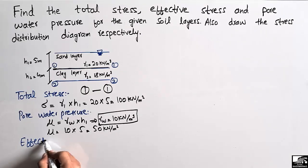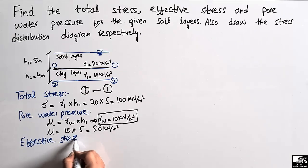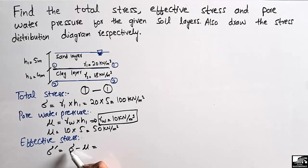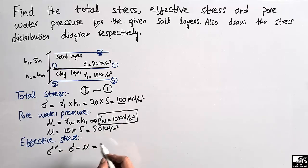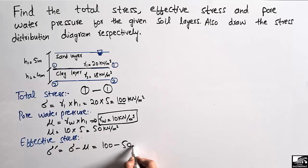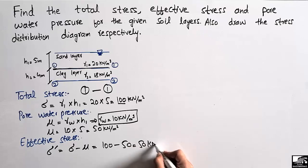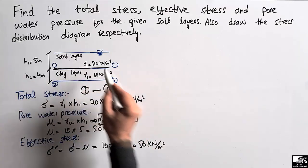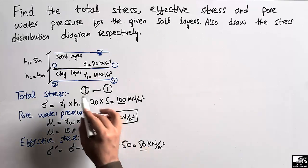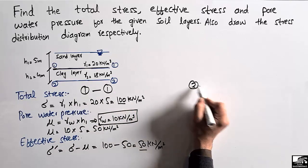The effective stress at section 1-1 is represented by sigma dash and equals total stress minus pore water pressure. So sigma dash equals 100 minus 50, which gives 50 kN per square meter. This is the effective stress at section 1-1.